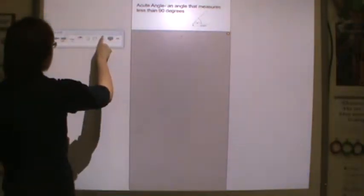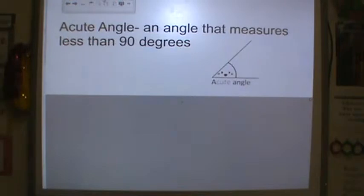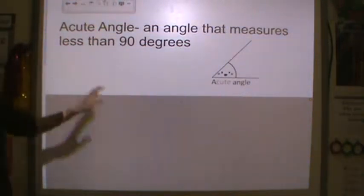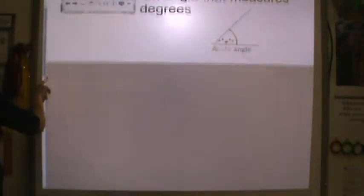We have first here, and I'll make this screen a little bit bigger, an acute angle. An acute angle is an angle that measures less than 90 degrees and here's an example of an acute angle. Yes, you're copying down this in your notes.